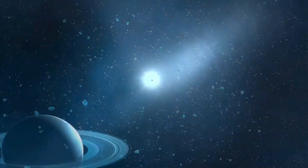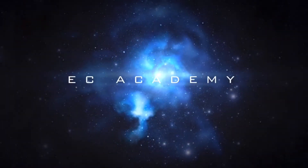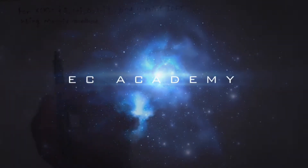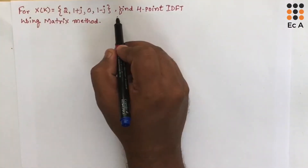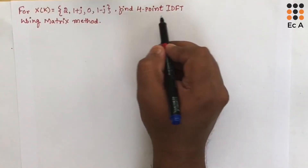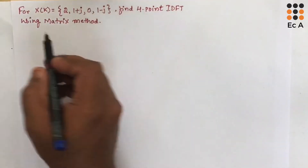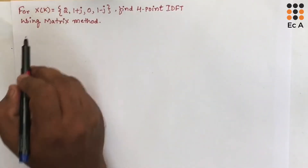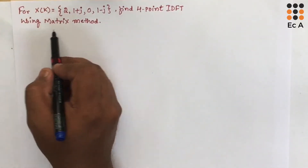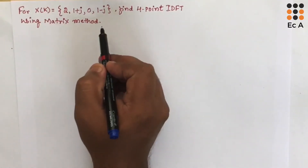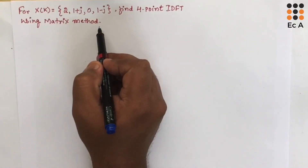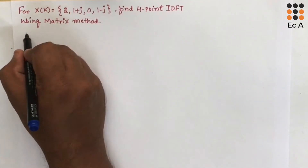Hello friends, welcome to EC Academy. In this lecture, let us understand how to find four-point IDFT for a given sequence using matrix method, which is also known as linear transformation method.